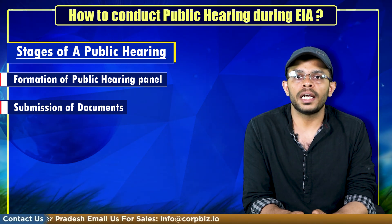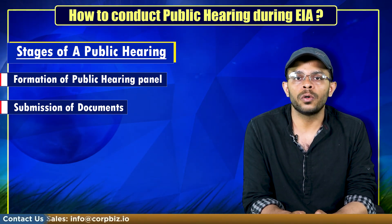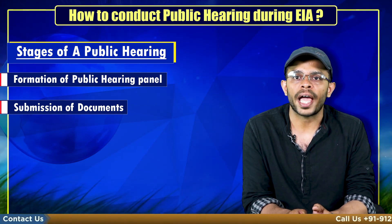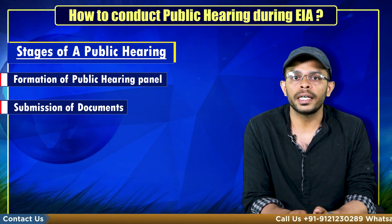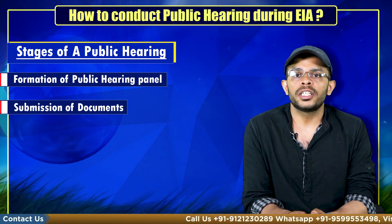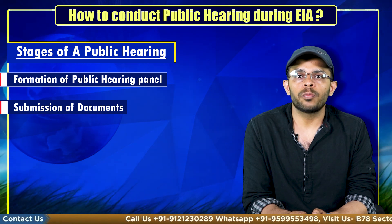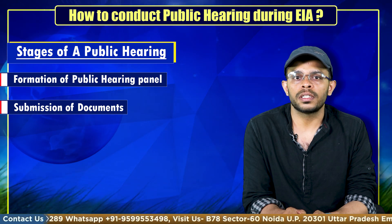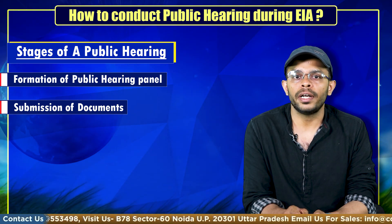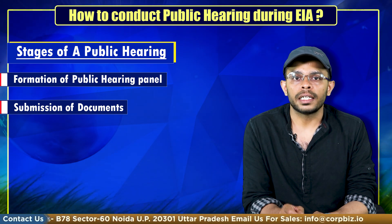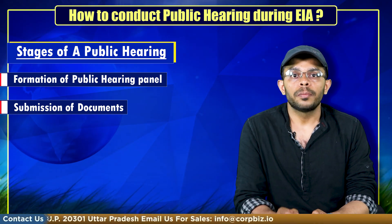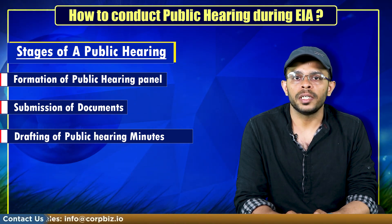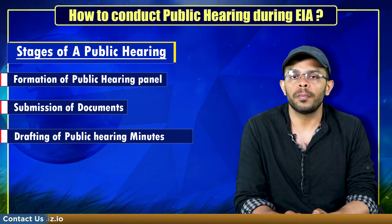This includes the executive summary of the project in English and the local language, including information about likely environmental problems and proposed actions for controlling degradation and pollution. Additionally, the SPCB is required to publish a public hearing notice in at least two widely circulated newspapers in the region, one of which must be in the vernacular language of the locality concerned. At the final stage, the project developer receives a copy of the final public hearing minutes from the SPCB, marking the completion of the public hearing process.